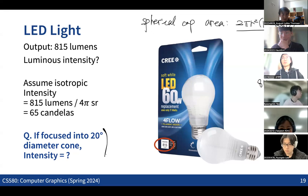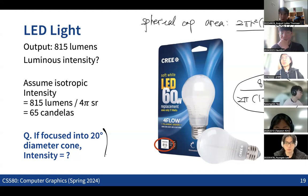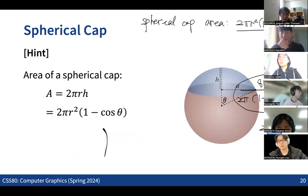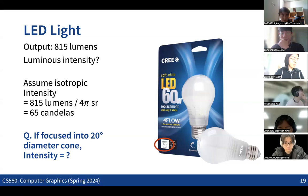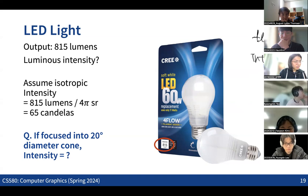So the intensity for a cone with 10-degree half-angle would be 815 divided by 2π(1 − cos 10°), which gives a much higher intensity than when light is emitted uniformly in all directions. We can do all these calculations using solid angles and related concepts. We discussed radiant flux and radiant intensity — intensity being flux divided by solid angle.